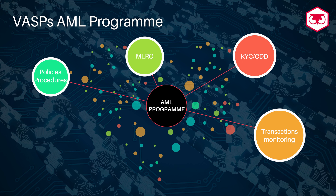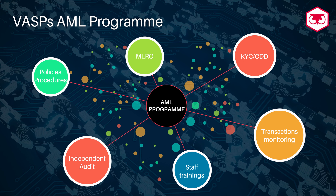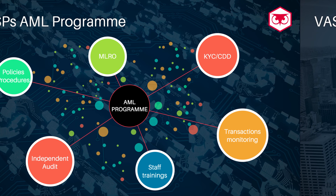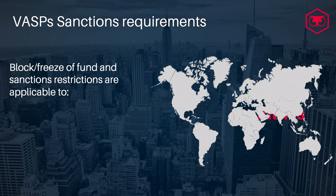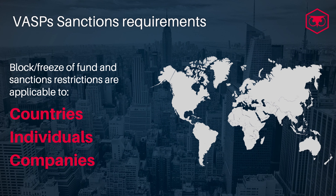There are different areas that a virtual asset service provider would need to comply with as part of their anti-money laundering program. The first is to have policies and procedures in place — these need to be reviewed on a regular basis and aligned with the risks identified in the organization's risk assessment.